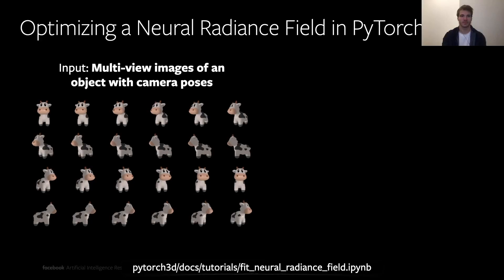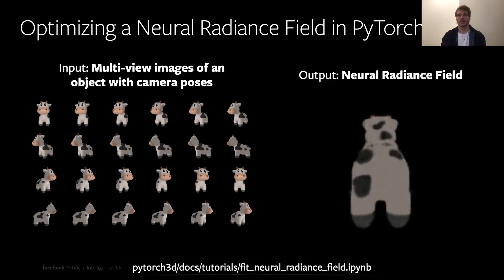The task looks as follows: we have a bunch of multi-view images of an object with corresponding camera poses — in this case, renders of a mesh of a cow from a camera rotating around it. As output, we want a neural radiance field, which is basically a colored implicit surface that we can render from any possible viewpoint. In what follows, I will go through the steps of a notebook that is going to be released together with the rest of the implicit rendering components.